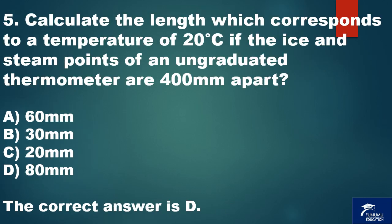Question 5. Calculate the length which corresponds to a temperature of 20 degrees Celsius if the ice and steam points of an ungraduated thermometer are 400 millimeters apart. A. 60 millimeters. B. 30 millimeters. C. 20 millimeters. D. 80 millimeters. The correct answer is D.